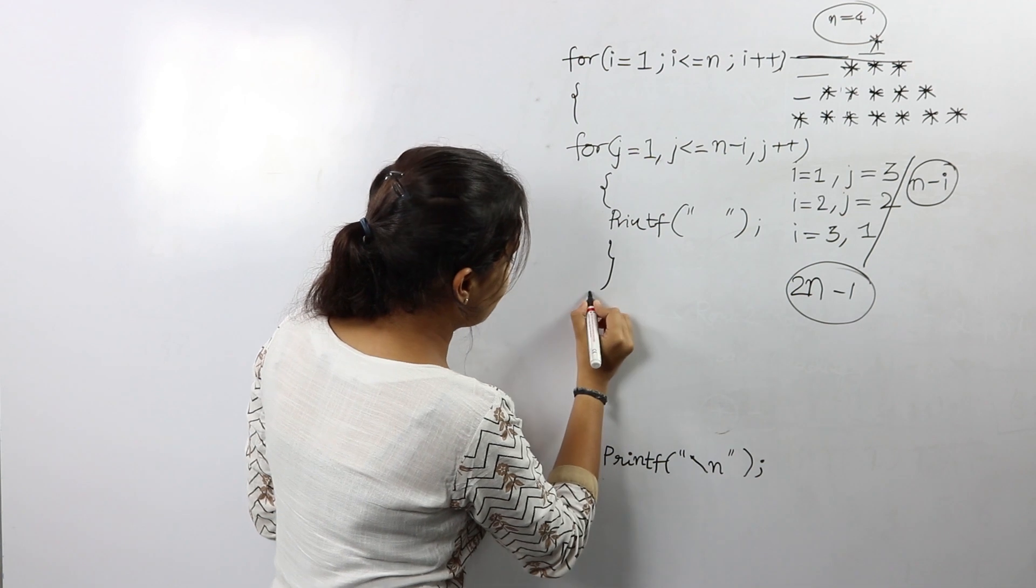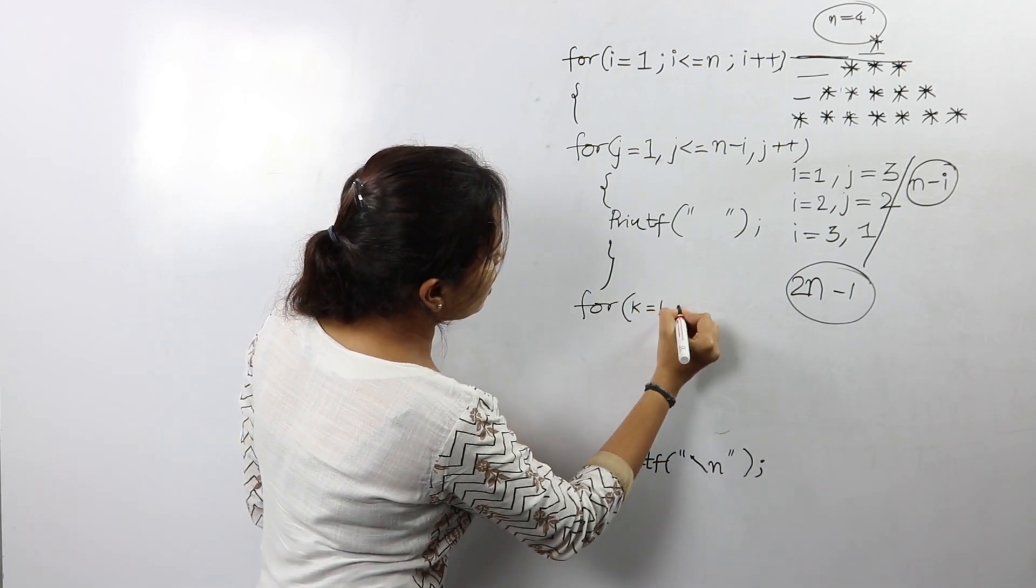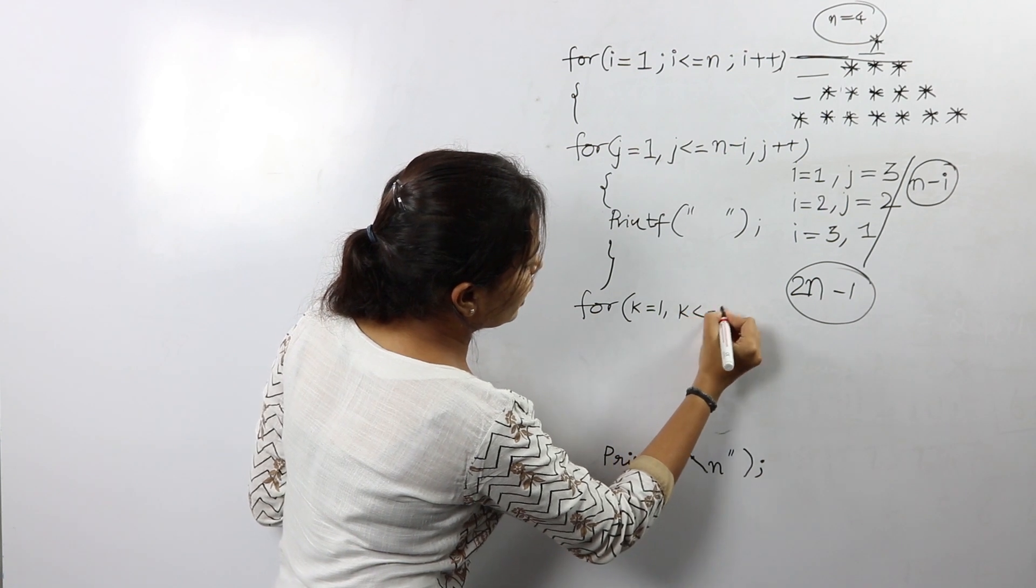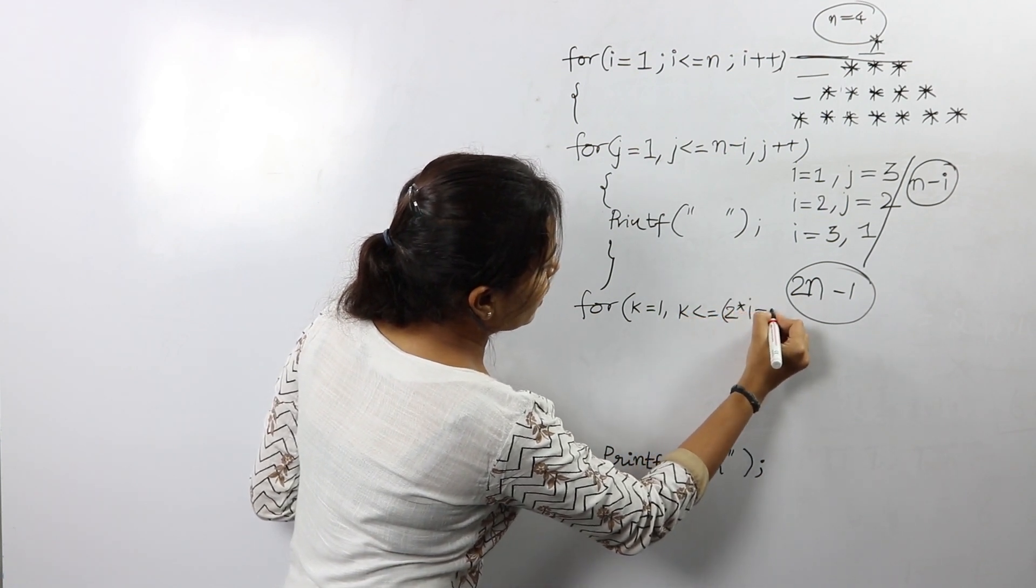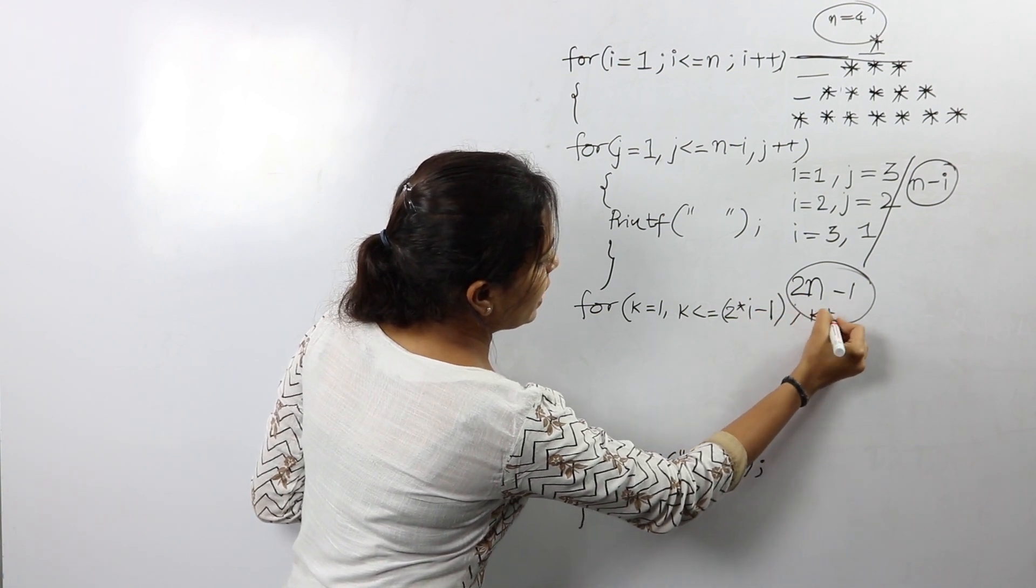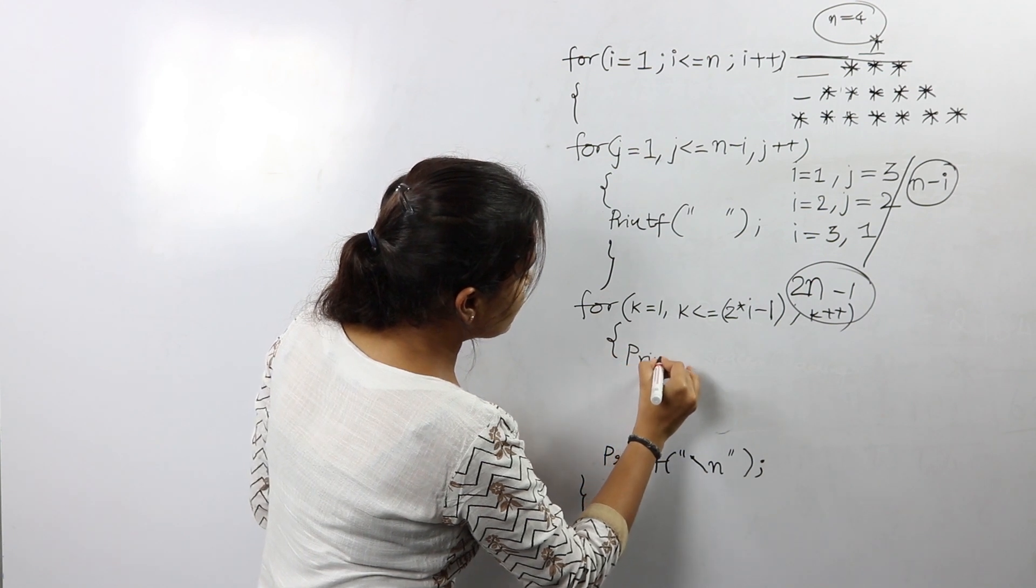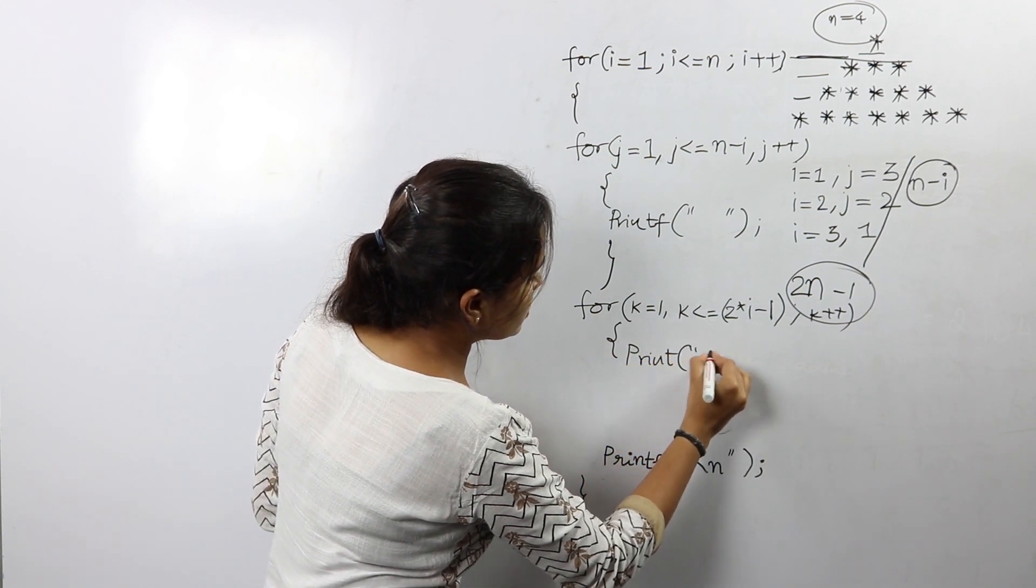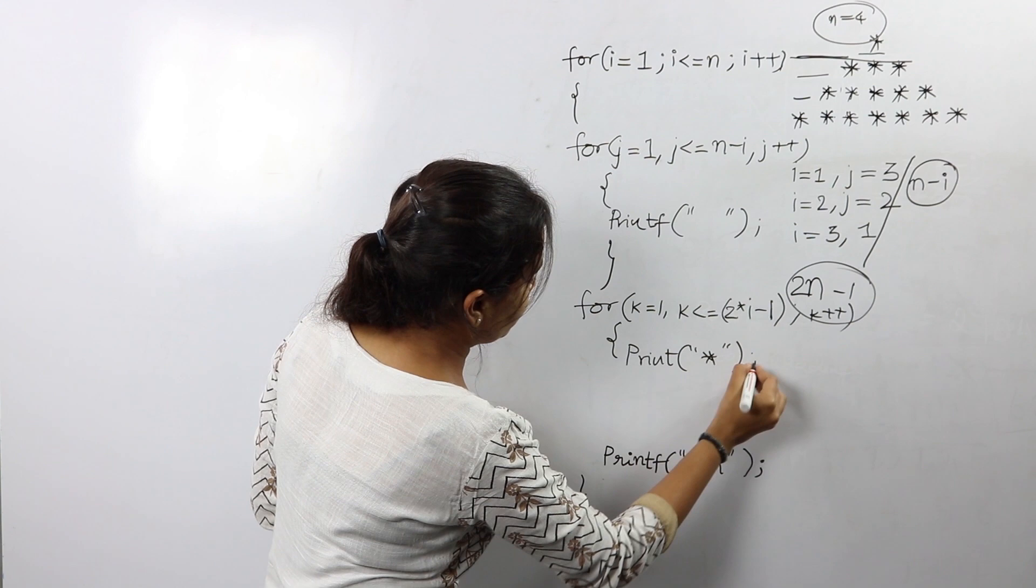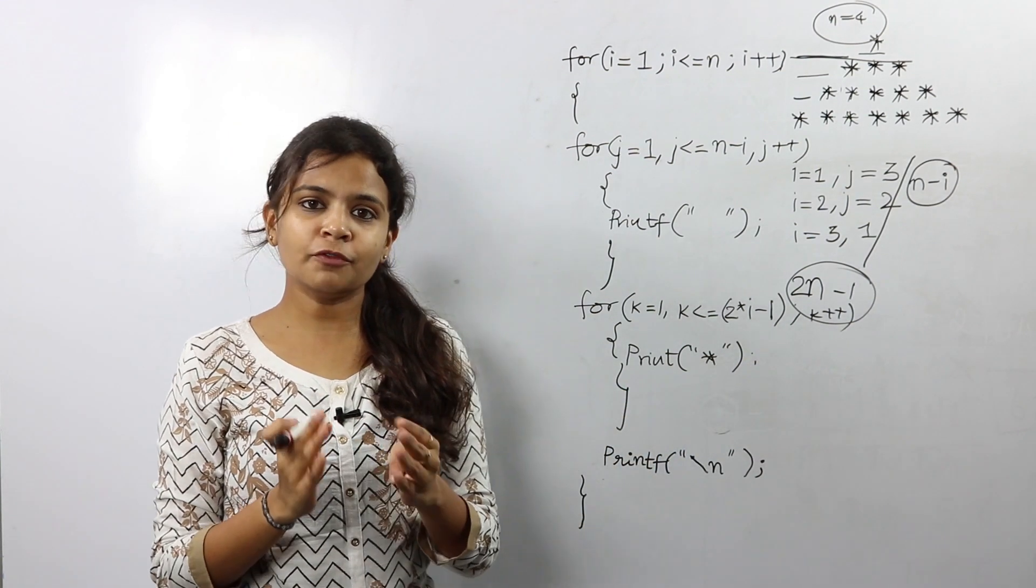This can be written as for k is equal to 1 to k less than or equal to 2 into i minus 1 to k plus plus. So inside the printf statement what goes is the star. So that's about the logic for printing a full pyramid guys.